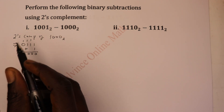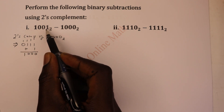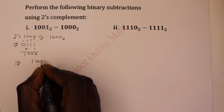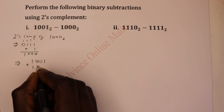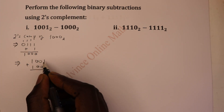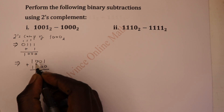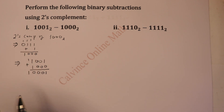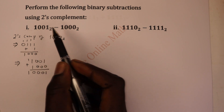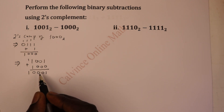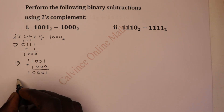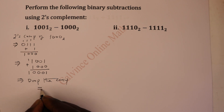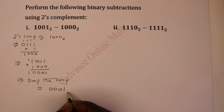The next step is to add this two's complement to the minuend, the number you're subtracting from. So we take 1, 0, 0, 1 and add it to the two's complement of the subtrahend. So 1 plus 0 is 1, 0 plus 0 is 0, 0 plus 0 is 0, and 1 plus 1 is 0 carry 1. Since both the minuend and subtrahend have 4 digits, you must drop the final carry, so the answer is 0, 0, 0, 1 base 2.